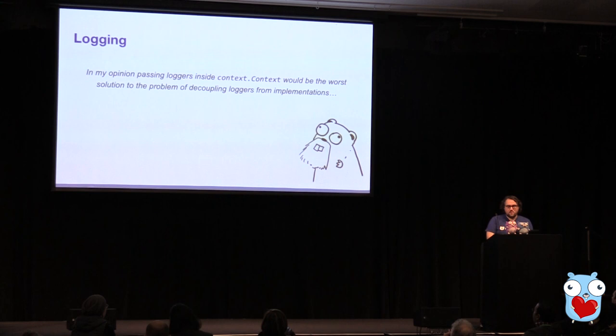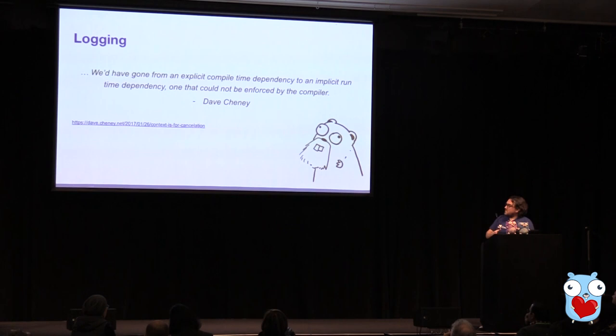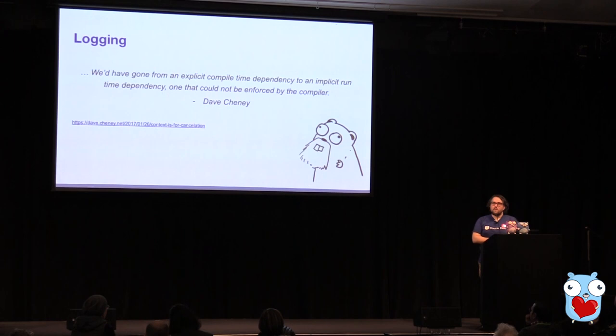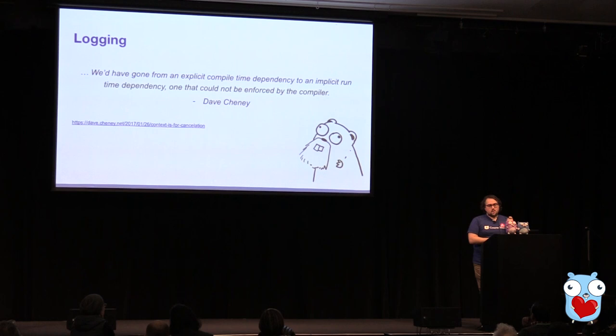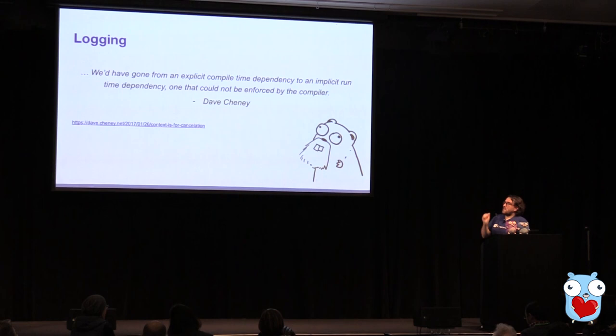So let's revisit that quote and see the continuation of it. It says: "We'd have gone from explicit compile-time dependency to an implicit runtime dependency, one that could not be enforced by the compiler." A lot of the issues he has with dealing with context are some of the issues I talked about earlier — needing to figure out what happens when you get nil, doing actual type checking. I think at least from this point, we don't have this problem here. Our interacting with the logger does have compile-time checks. All the actual using of the context is pushed inside of that package, where we can make sure that it works given any context and is easy to use and understand.